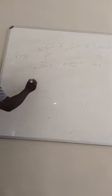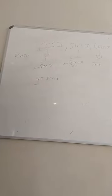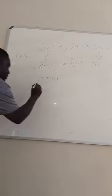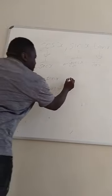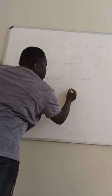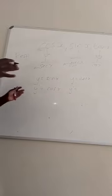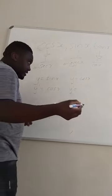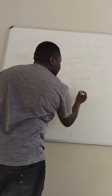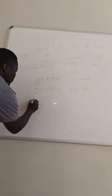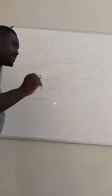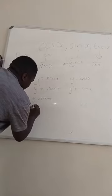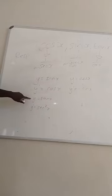For trig derivatives you must memorize: if y equals sin x, then y prime equals cos x. If y equals cos x, then y prime equals negative sin x. If y equals tan x, then y prime equals sec squared x. Students often forget this last one, so let me prove it quickly.